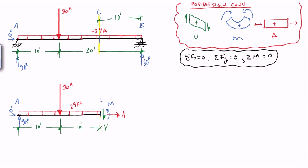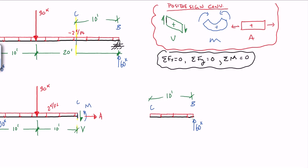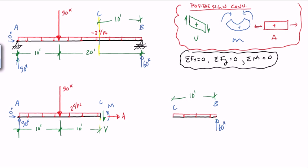We can also do the right side of the beam and we'll see we get the same answer. The right side is a little bit simpler — it has the 2 kips per foot load on it, the 60 kip reaction, and then we get the same shear. It's up if it's on a left face. Using these sign conventions — up on the left face, clockwise on a left face, and out on the left face — the moment M and axial load A are drawn accordingly.